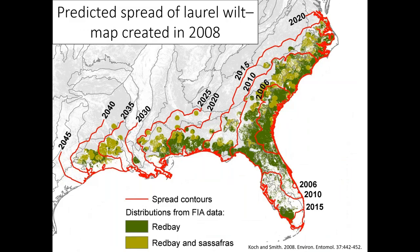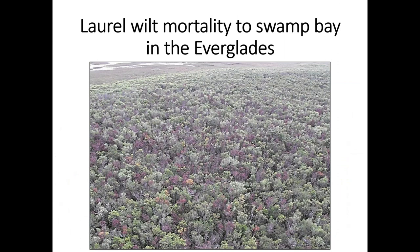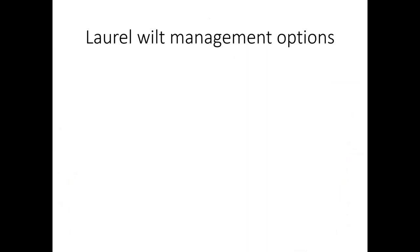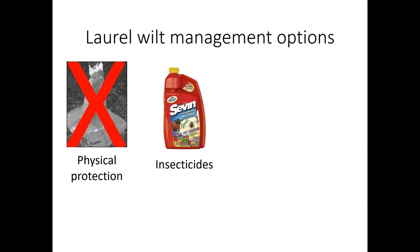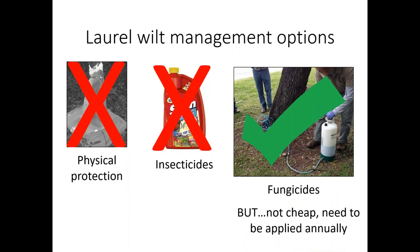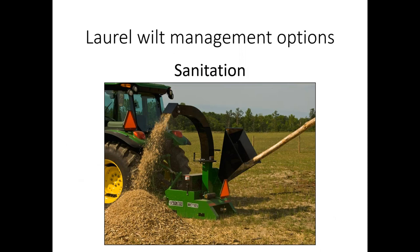Managing laurel wilt is tricky. You can't physically protect the tree; insecticides work but in most of the southeast these beetles fly year-round and you have to hit them on the outside before they bore in, so that's not feasible. Fungicides work — that's the good news — but they're not cheap and need to be reapplied annually, so they're best suited for valued yard trees. Sanitation is one of the best things we can do: chip infested material very small to kill the beetles. We're watching laurel wilt closely and hope to keep it out of other parts of the continent.